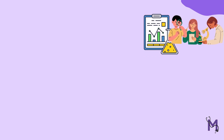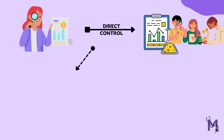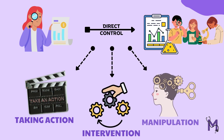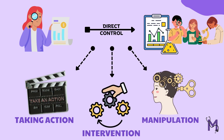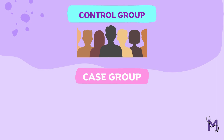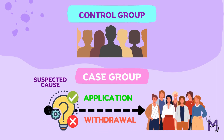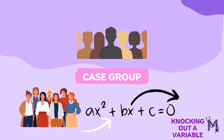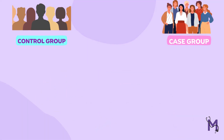An experimental study is conducted under the direct control of the investigator. It involves taking some action, intervention as well as manipulation. This could be done by deliberate application or withdrawal of a suspected cause, or by changing a variable in the causative chain in the experimental group while making no changes to the control group.